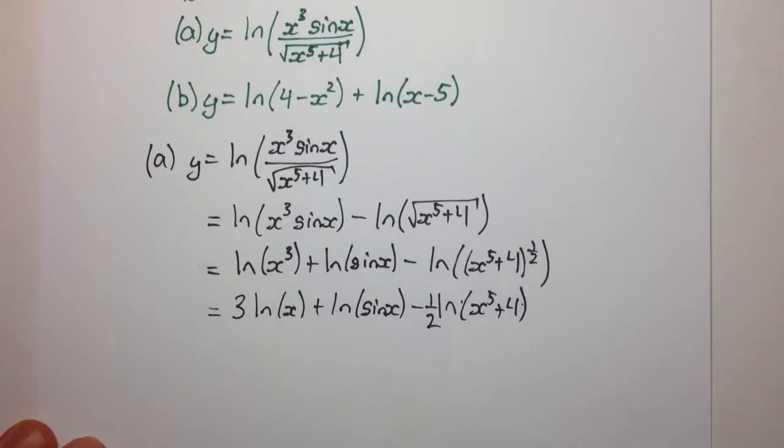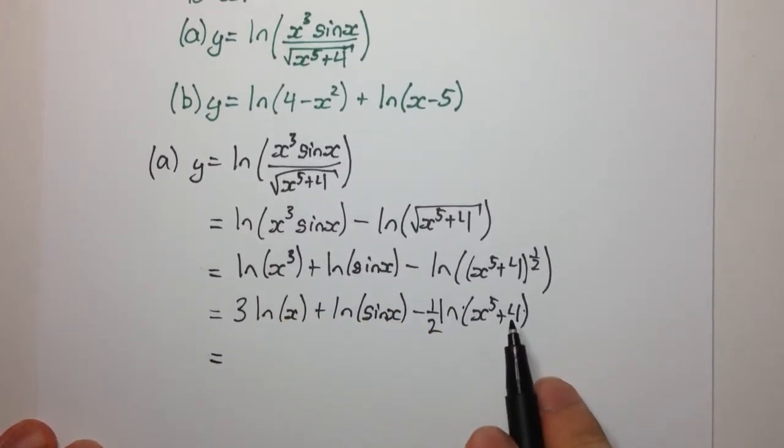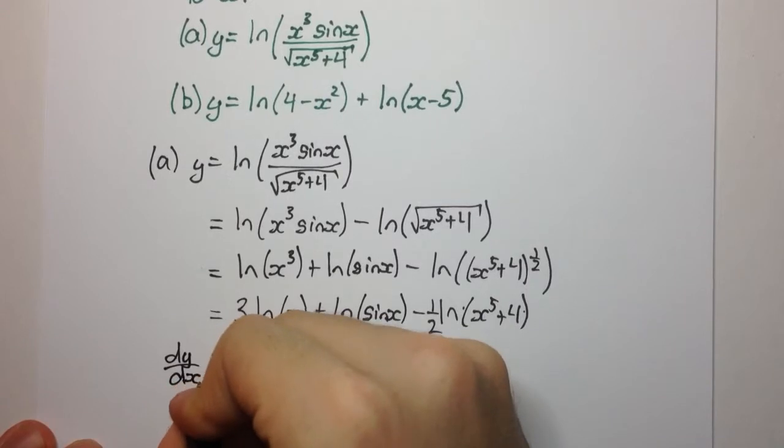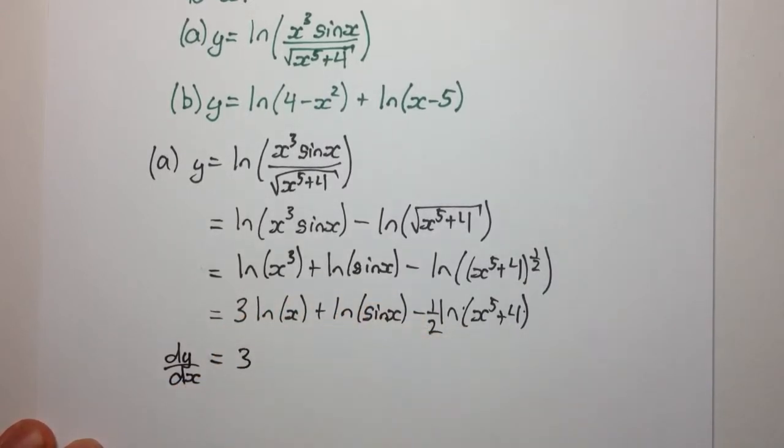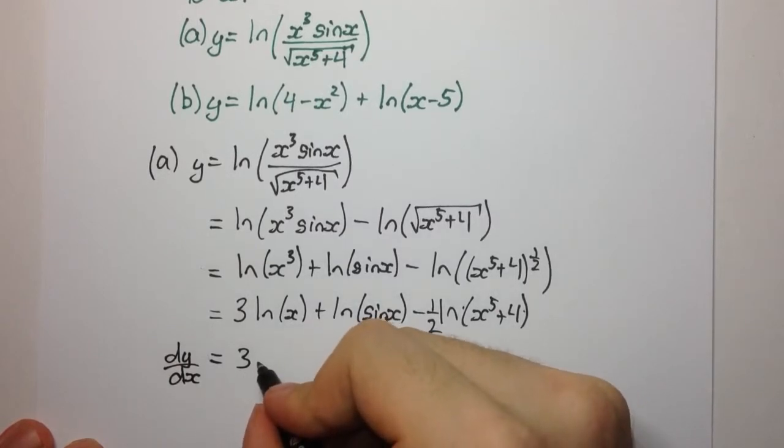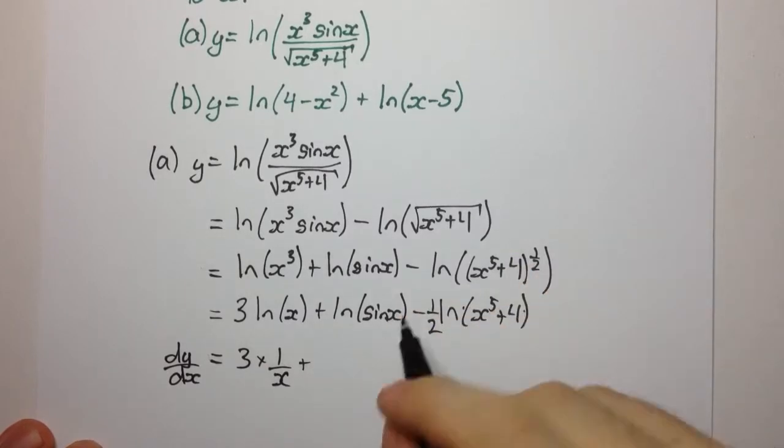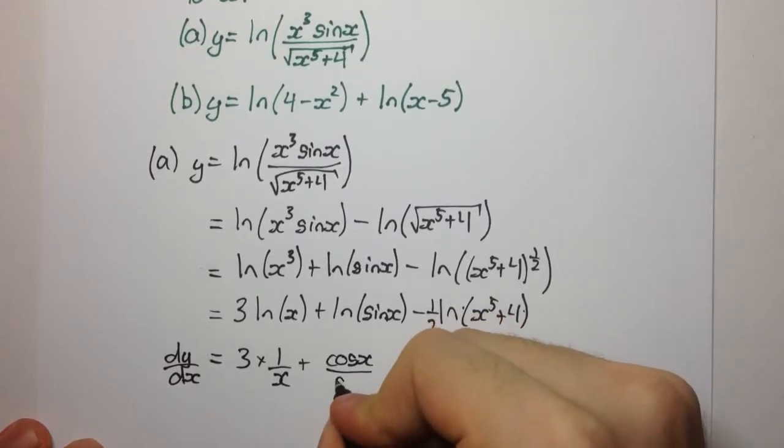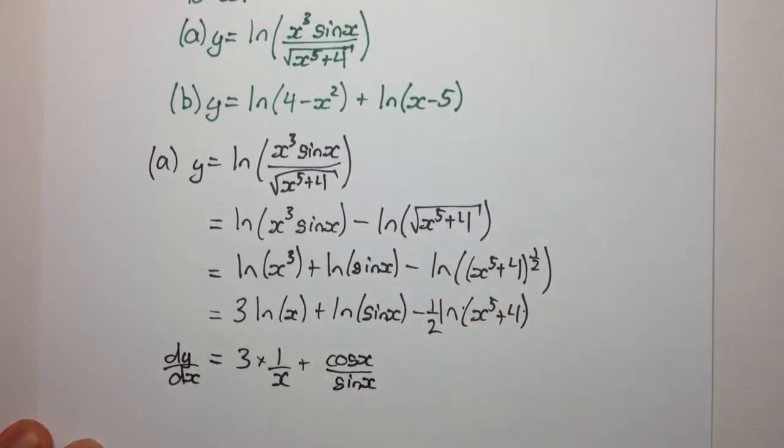Okay, now we can go ahead and differentiate these because these are much simpler to differentiate than this original function here. So dy on dx is going to be 3. Now, the derivative of x is 1, so we're going to have 3 times 1 over x plus the derivative of sin is cosine. So we're going to have cos x on the original function, sin x.